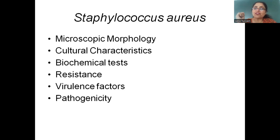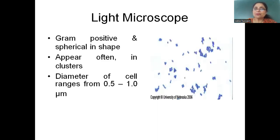Starting with the microscopic morphology of Staphylococcus aureus: when we see it under a light microscope with Gram staining, it is a Gram-positive organism, so it will appear violet or bluish in color. Since it is a coccus, it will be spherical in shape and will appear in clusters — grape-like clusters. Staphylococcus is named after this grape-like cluster arrangement.